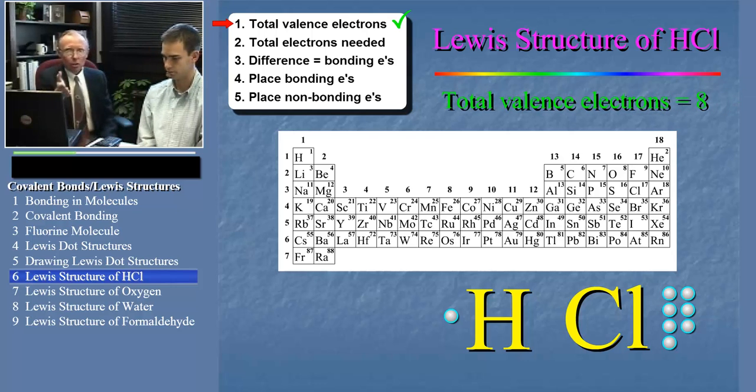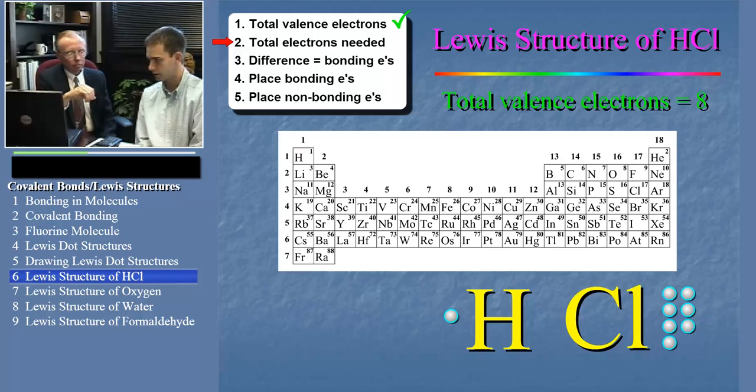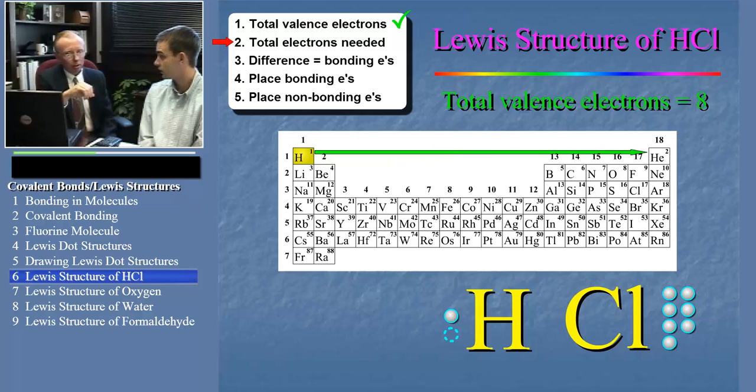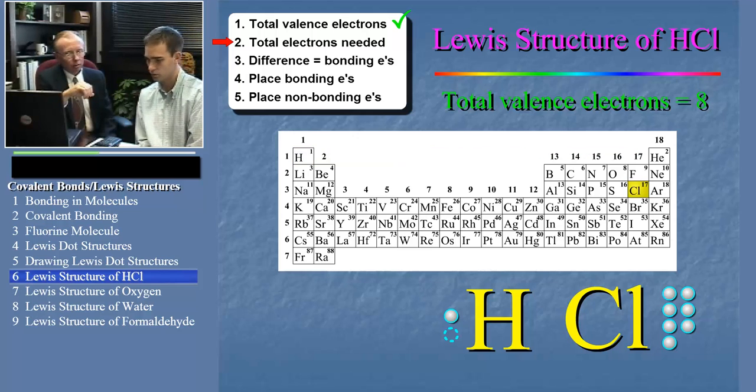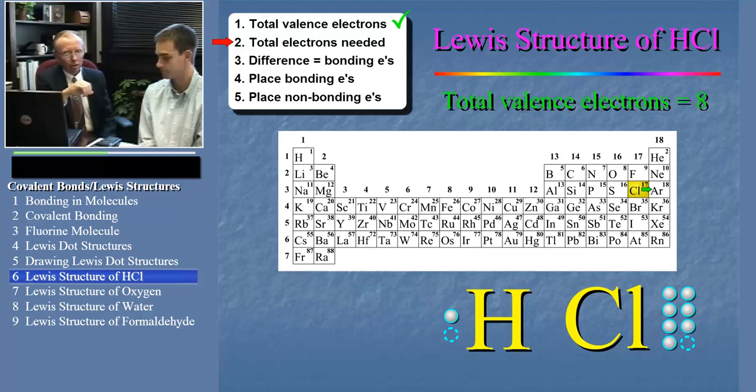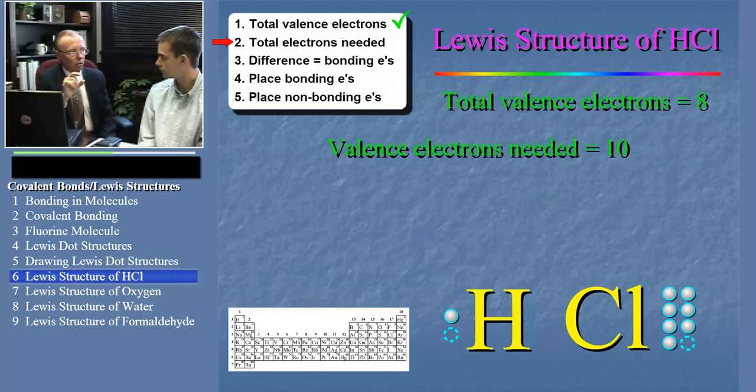Now, we need to decide how many valence electrons are needed by the elements in the molecule. Let's take them one at a time, Bracken. Okay. Hydrogen. Hydrogen will need two electrons to achieve the electron configuration of helium. Right. And how about chlorine? Chlorine will need one more electron. So it will need eight total electrons to achieve the electron configuration of argon. Right. Good. So the total number of electrons needed in the molecule is two plus eight, right? Ten, yep. Ten.